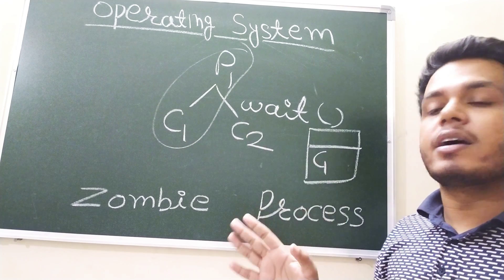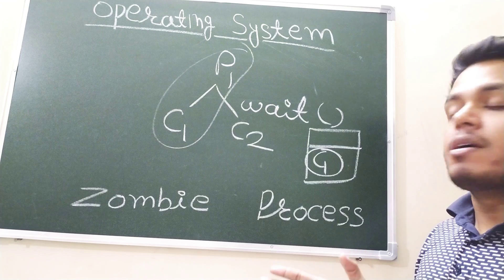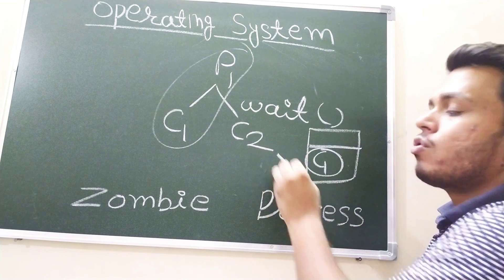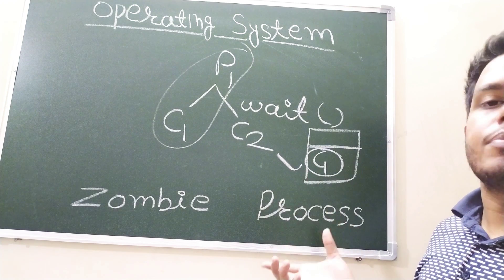Although C1 has completed the task, that is why that process which has completed a task but its entry is still in the process table is known as a zombie process. So this is the concept of zombie process.